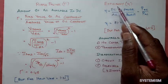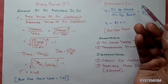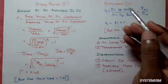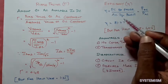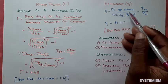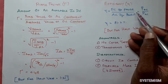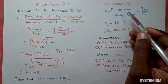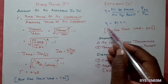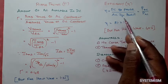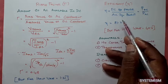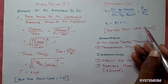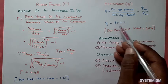Then we will see about the efficiency of our bridge rectifier. Efficiency means output by input — DC output power by AC input power, that is PDC by PAC. So efficiency is the ratio of PDC to PAC. In a bridge rectifier and full wave rectifier, the efficiency is 81.2%. Good efficiency. But in half wave rectifier, you get only 40.6%. So bridge rectifier is double the percentage efficiency of your half wave rectifier.